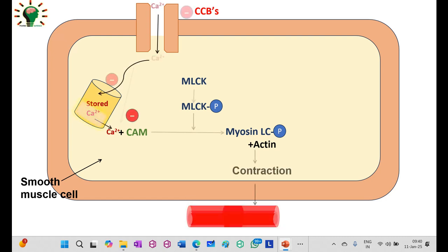This results in less activation of MLCK, leading to reduction in myosin light chain phosphorylation. With fewer phosphorylated myosin molecules, actin-myosin interaction is inhibited and the smooth muscle relaxes.